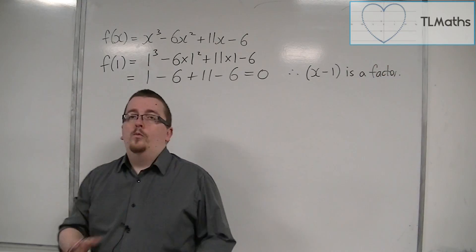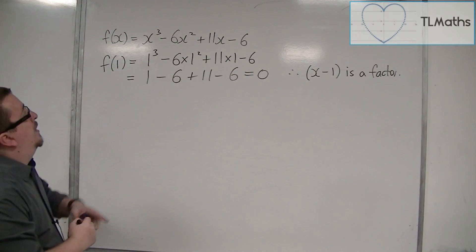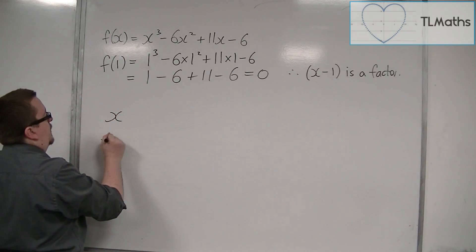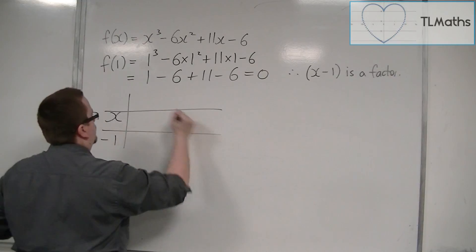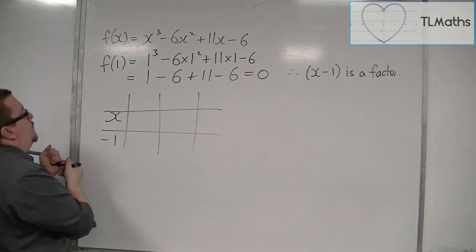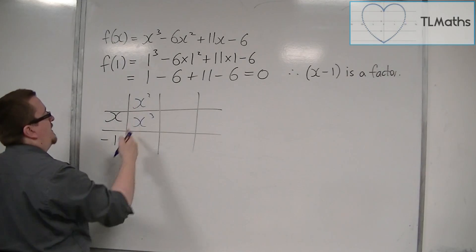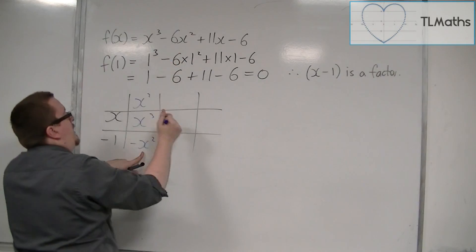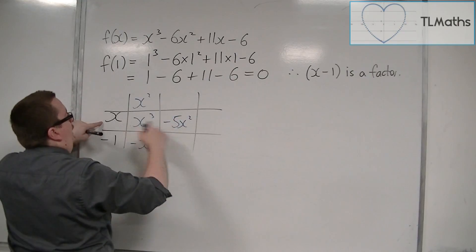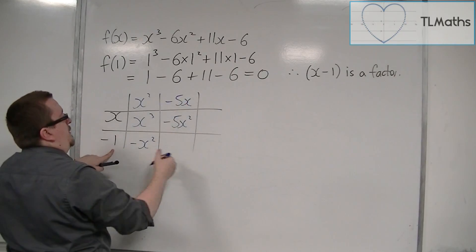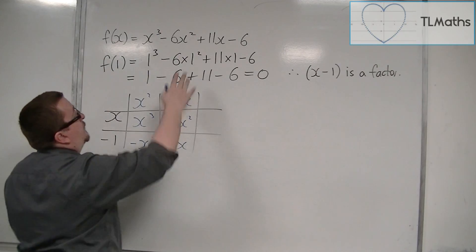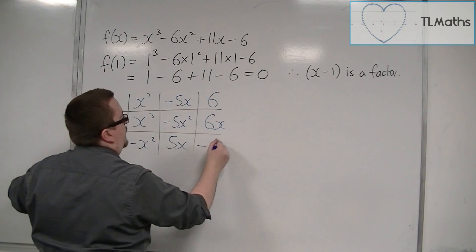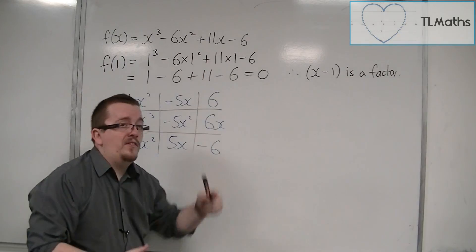With that in the bag, we can now use polynomial division on this cubic. We divide by x minus 1. We want x cubed, so x times x squared makes x cubed. x squared times minus 1 is minus x squared, but we want minus 6x squared, so we need minus 5x squared. Then x goes into that minus 5x; minus 5x times minus 1 is 5x, but we want 11x, so we add 6x. Then 6 times minus 1 is minus 6, and there is no remainder because minus 6 is exactly what we wanted.